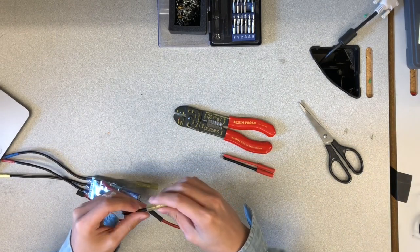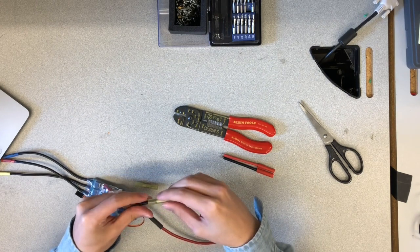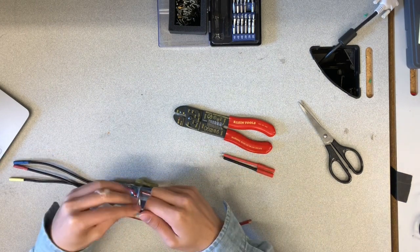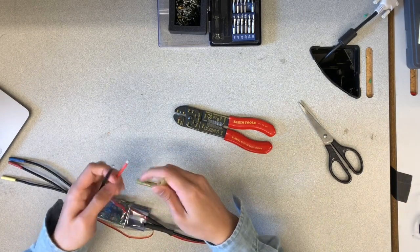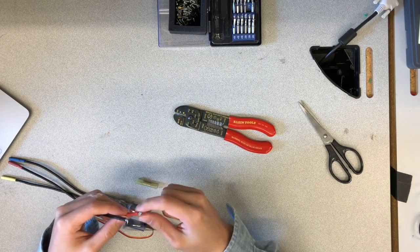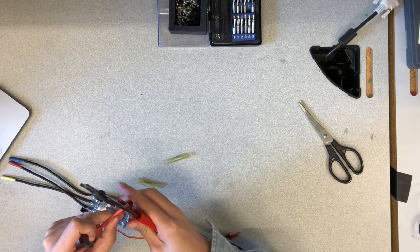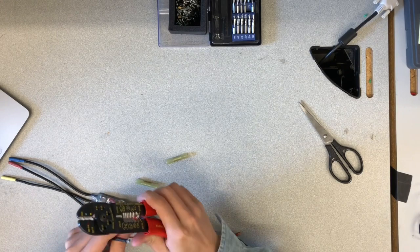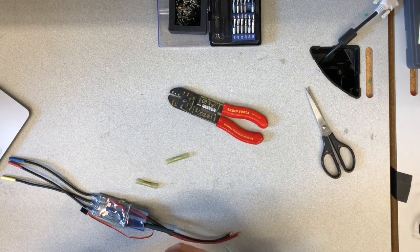Now we will take out the solderless heat shrinks and insert the stripped end of the battery connector wires into the solderless wire connector. The exposed copper should be inside the metallic cylinder of the solderless wire connector. A key part is ensuring no exposed copper is sticking out.